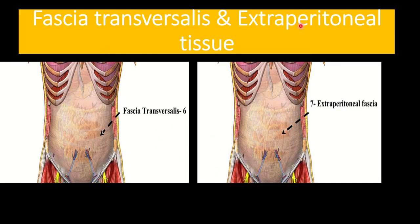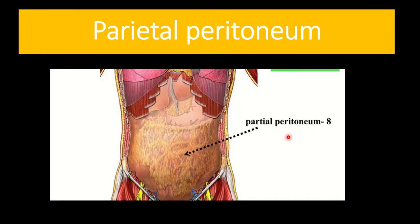The next layer is fascia transversalis and extraperitoneal tissue. In the picture, the yellowish fibrous layer is the fascia transversalis. Behind the fascia transversalis there is another structure — the extraperitoneal fascia or extraperitoneal tissue. Finally, we can see the parietal peritoneum, which is very close to the gut, and the visceral peritoneum is the other layer directly attached to the gut.